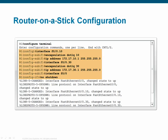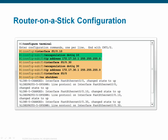When configuring sub-interfaces, you must first create the sub-interface by using the interface command followed by the interface ID and sub-interface ID. In this example, sub-interface 10 has been created on physical interface F00. The convention is to match the sub-interface number to that of the VLAN ID — for example, sub-interface 10 will be used for VLAN 10. Next, use the encapsulation dot1q command followed by the VLAN number that should use this sub-interface. Finally, apply an IP address to this sub-interface. This IP address will serve as the default gateway for devices on that VLAN.